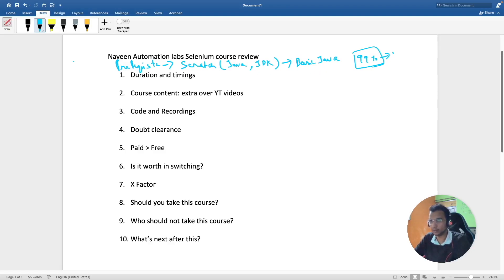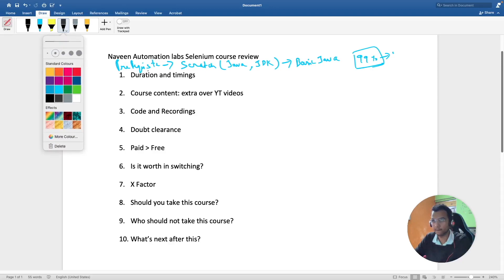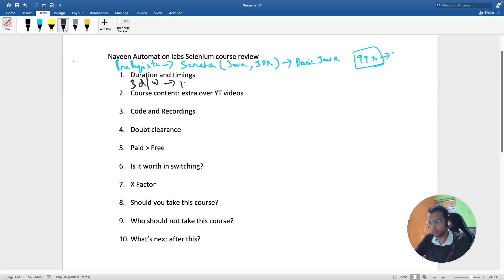Now coming to the duration and timing. So I enrolled for the weekday batch, it's not a weekend batch. That's three days per week and each class will take around 1 to 1.15 hours. So one hour is the duration of each class.